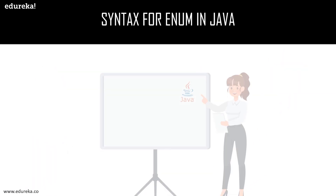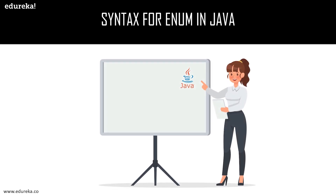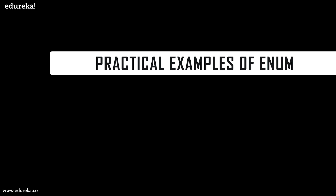Let us discuss the syntax for enum. The keyword is enum, followed by the name of the variable — for example, edureka — and inside it we store the constants. Now let us move on to practical examples to understand Java enums in a much better way.